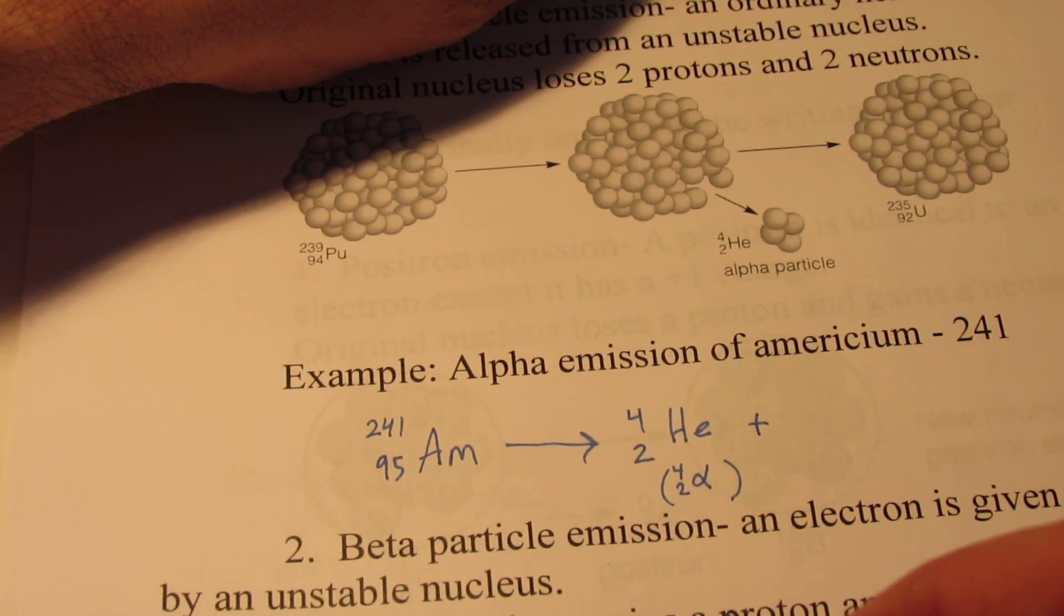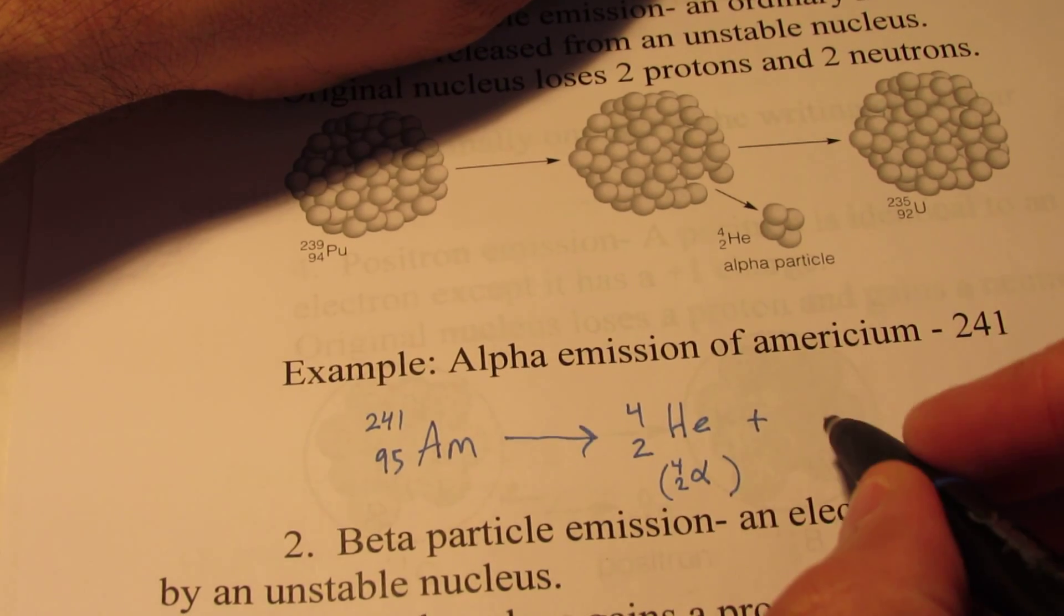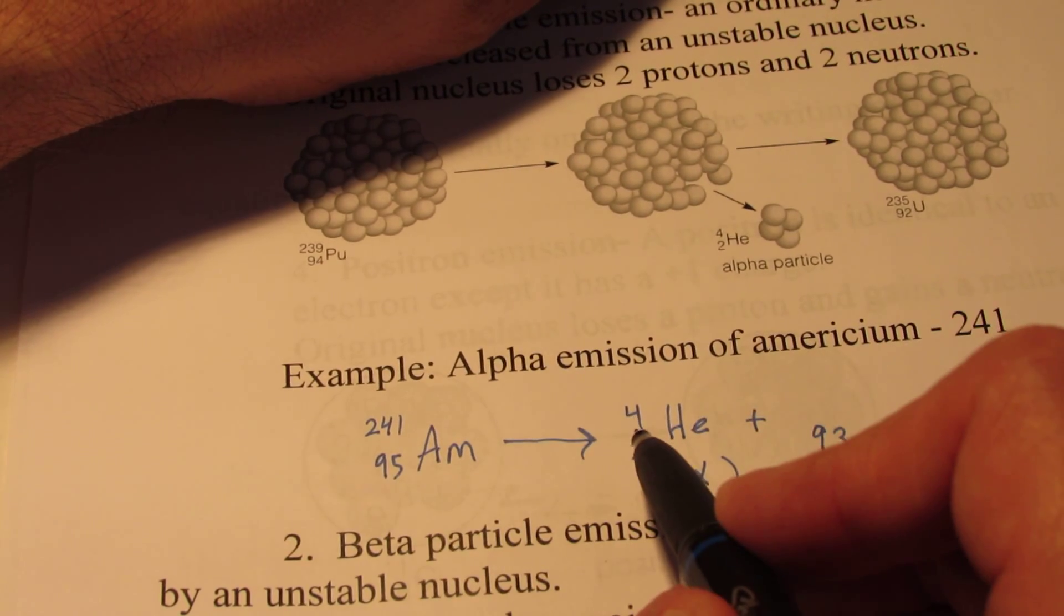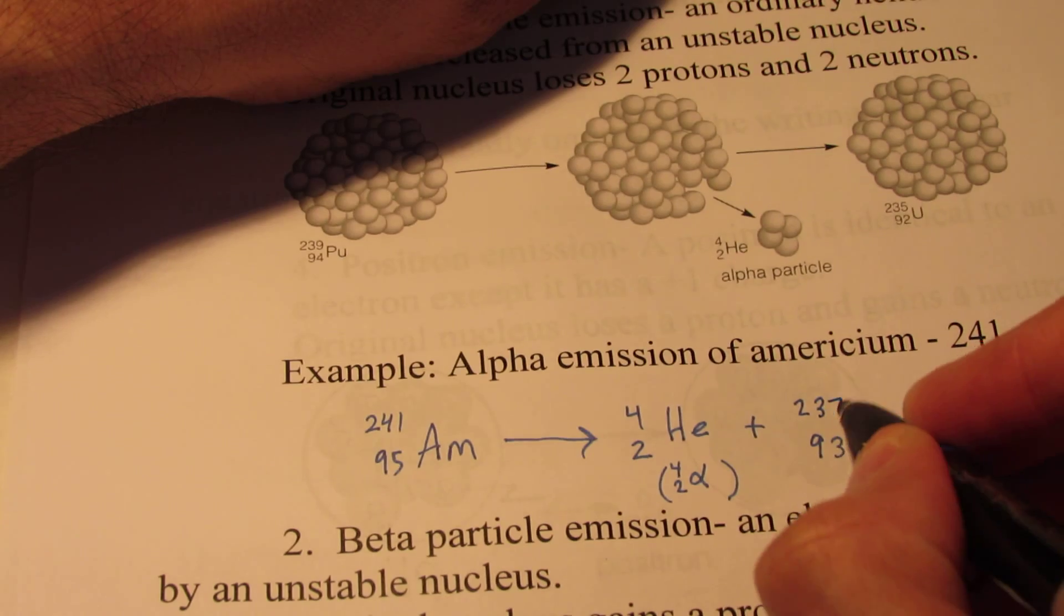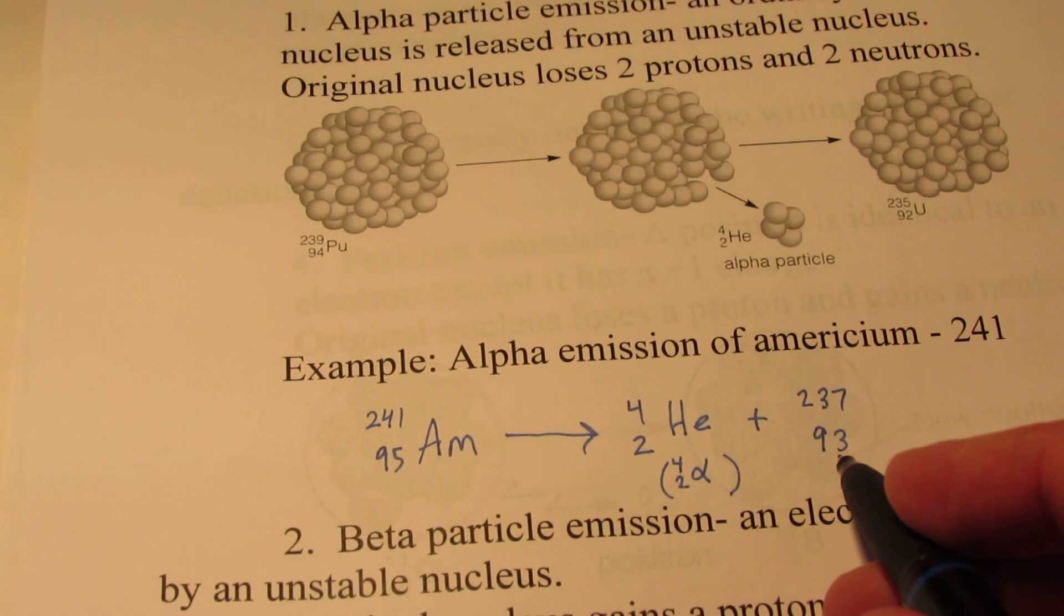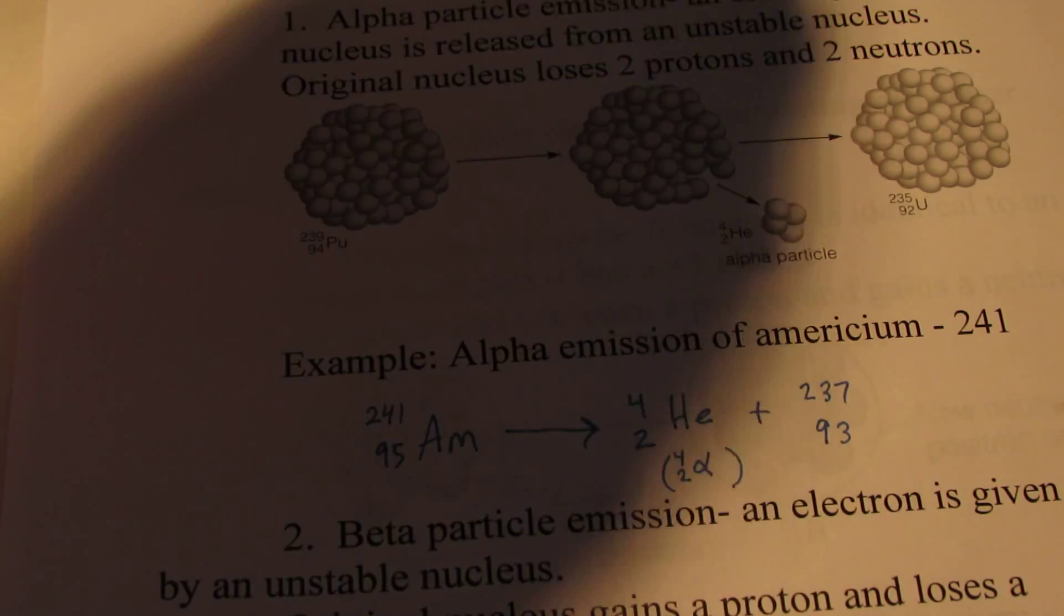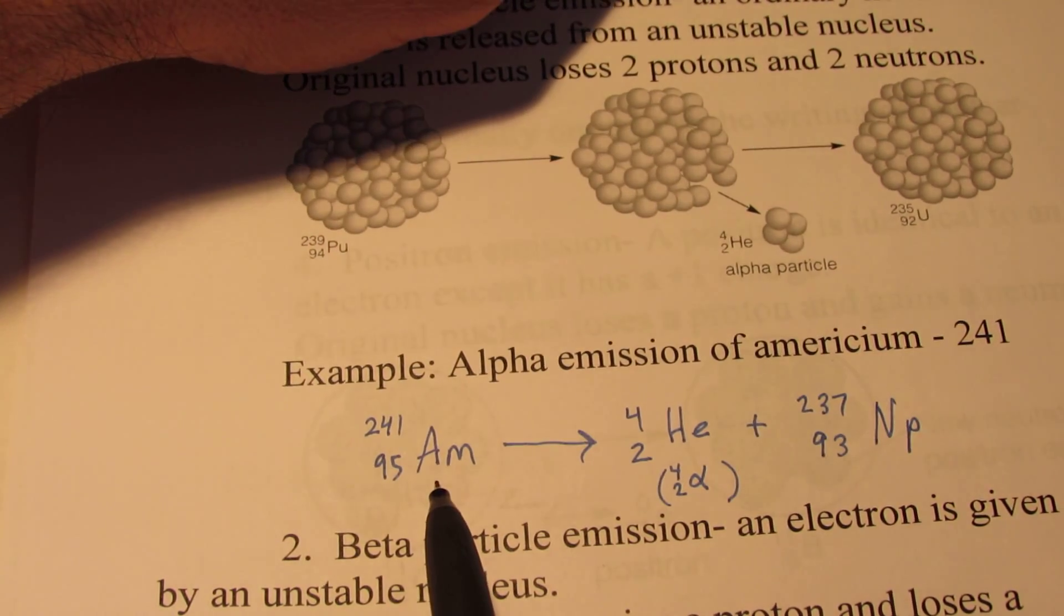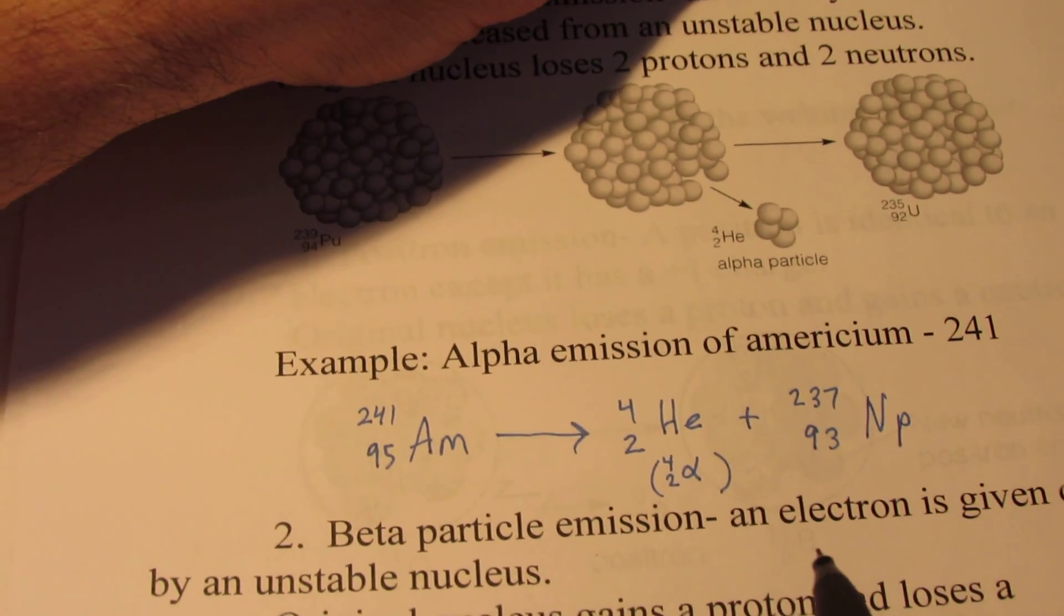What's the other product nucleus? Let's see. We started with 95 protons, two of them were ejected, so we're down to 93. The mass started out to be 241. We lost two protons and two neutrons, so a mass of 4. So now we drop to an atomic mass of 237. What element has the atomic number 93? Well, if we look on our periodic table, we can find atomic number 93, and that is neptunium, Np. So americium will transmutate by giving off an alpha particle into neptunium-237.